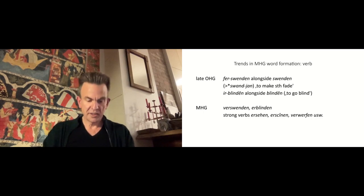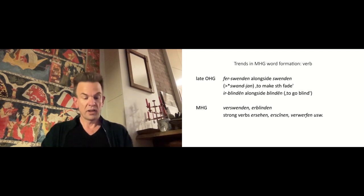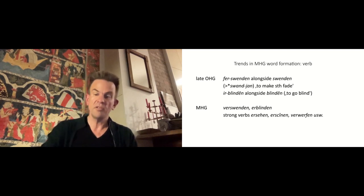This largely functional system of verb derivation is lost with the weakening of unstressed syllables in Middle-High German. The suffixes no longer differ from other infinitive endings and are therefore no longer recognizable as an expression of semantically differentiated word formation patterns. With the onset of the weakening of unstressed syllables, the way is clear to foreground prefixation in German verb formation.